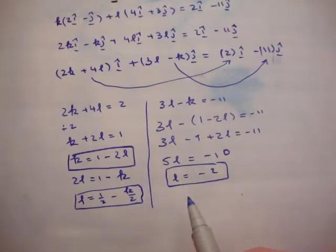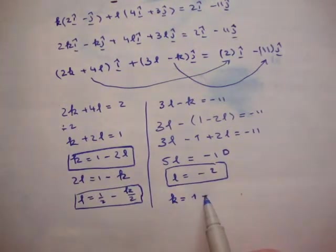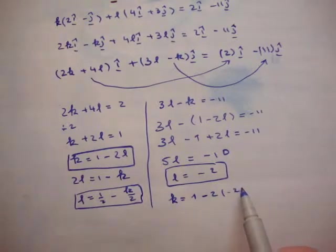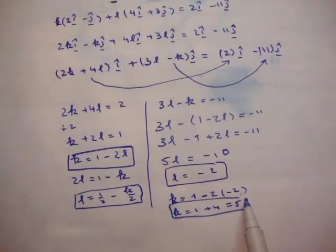And we know that k is equal to 1 minus 2l, therefore k is equal to 1 minus 2 times minus 2. k is equal to 1 plus 4 equals 5. And that's correct.